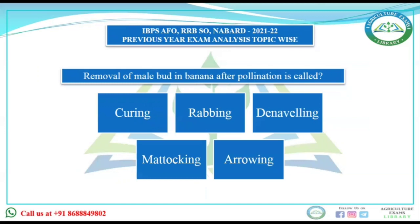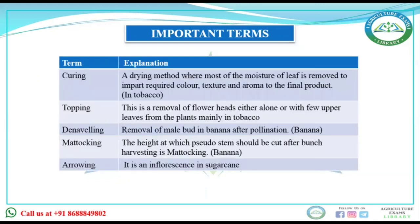Our next question: removal of male bud in banana after pollination is known as — options are curing, rabbing, denaveling, matocking, and arrowing. First, let's understand all terms. Curing is generally done in tobacco and tea to remove moisture from the leaf so that it can impart color, texture, and aroma to the final product.